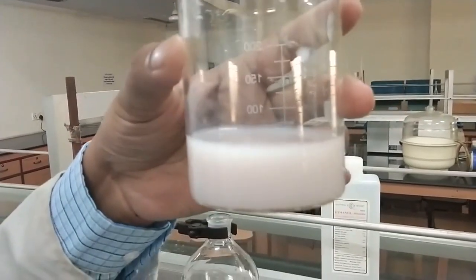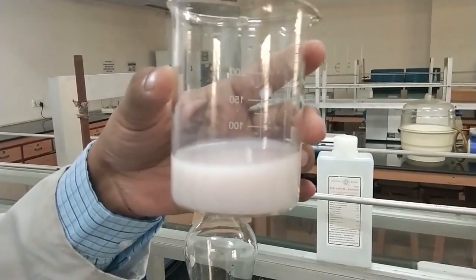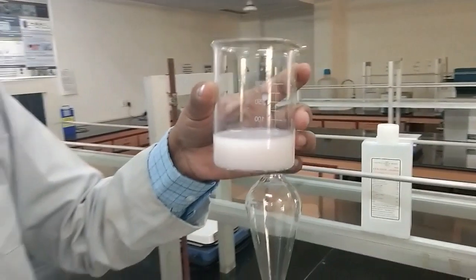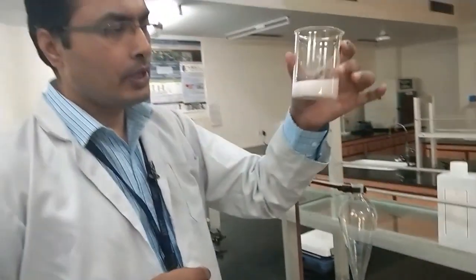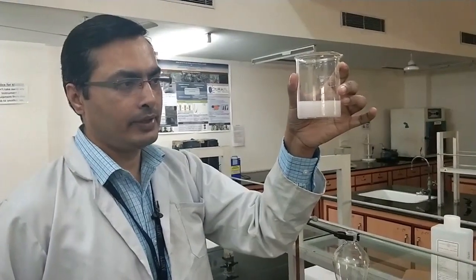In order to make even smaller particles, you can prolong the addition of iron into this and that will make even smaller sizes. As you can see, it is not settling down, so it is a colloidal solution of iron pyrophosphate. Thank you.